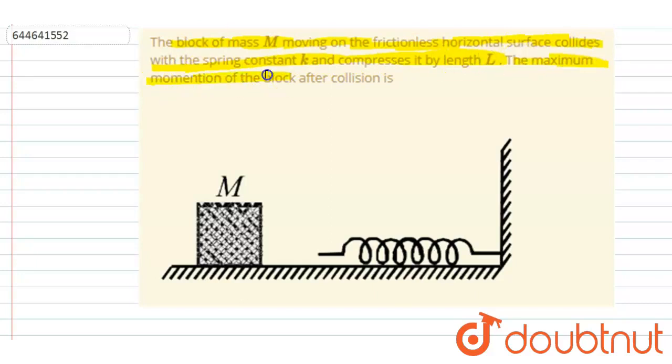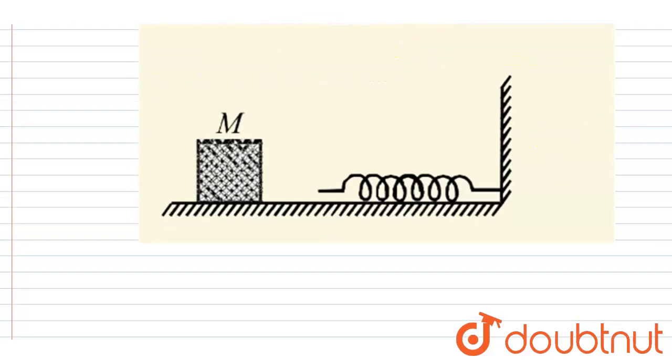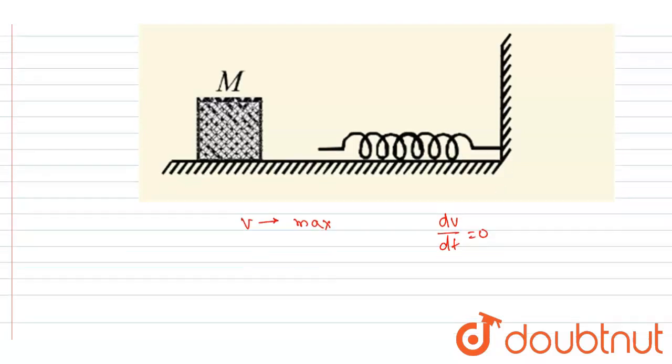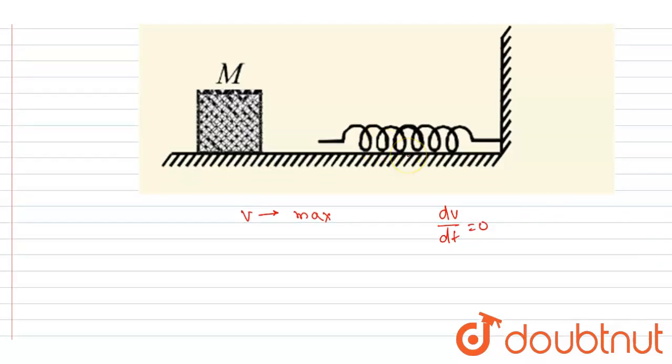The momentum will be maximum when the velocity will be maximum, and we know that the velocity will be maximum when the acceleration will be zero, dv by dt will be zero. The velocity will be maximum when the acceleration, that is dv by dt, will be equals to zero, and it will happen when the compression in the spring will be zero.